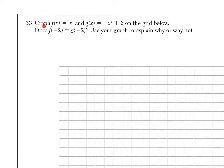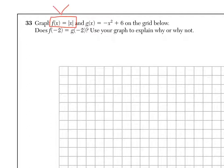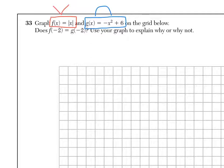Let's start with question number 33. It says graph f(x) equals the absolute value of x, and g(x) equals negative x squared plus 6 on the grid below. We know that the absolute value function is going to take a V-shape, and this is a quadratic function — because it's negative, it's going to look like a frown. The question also asks: does f(-2) equal g(-2)? We'll use the graph to explain why or why not.